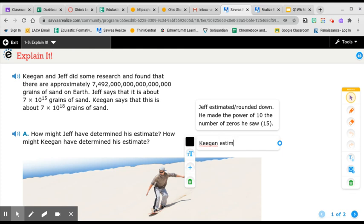Keegan also estimated, rounded down, right? Because he ended up with 7 as well as his coefficient out in front. But his power of 10 is 18, not 15.